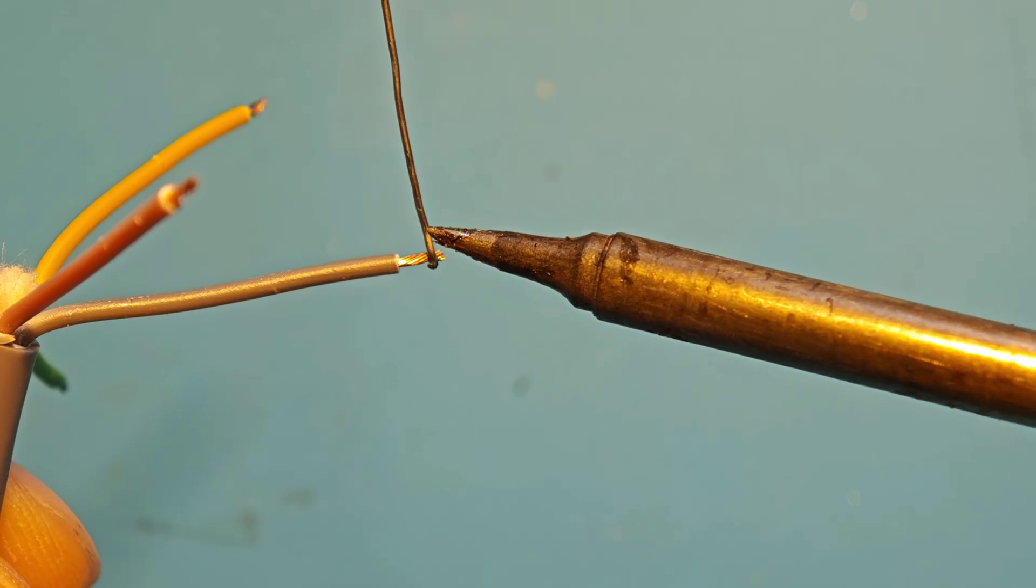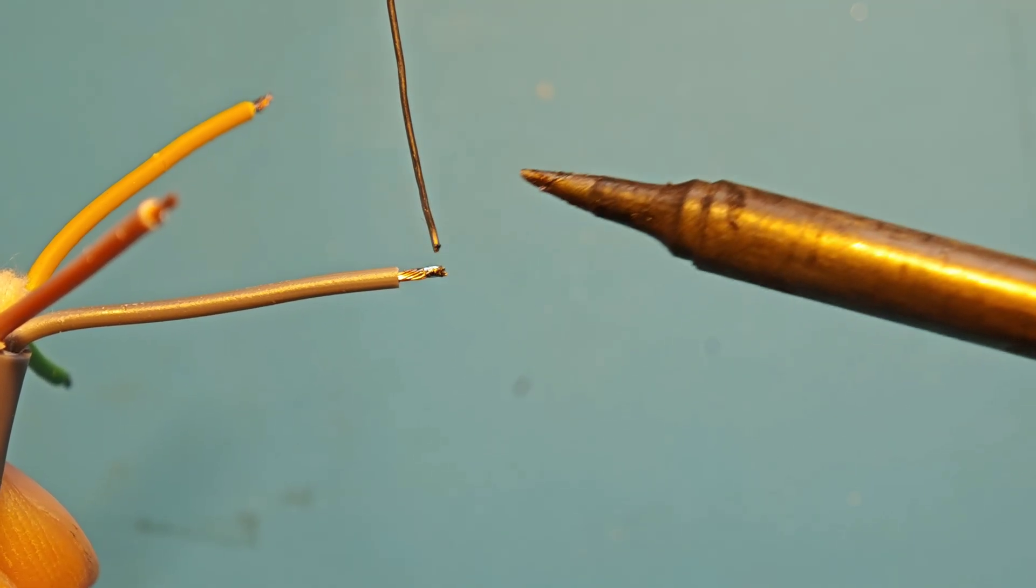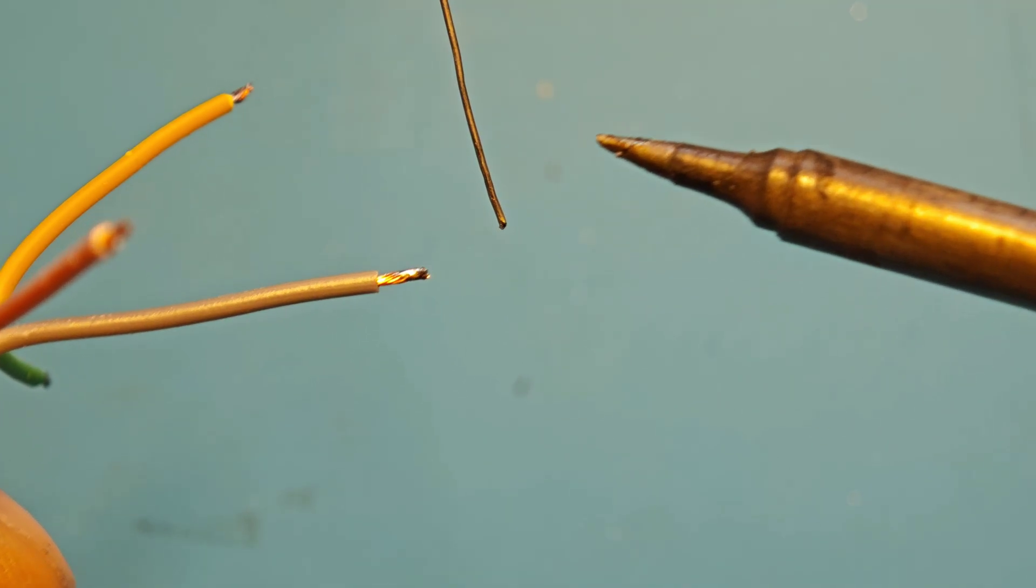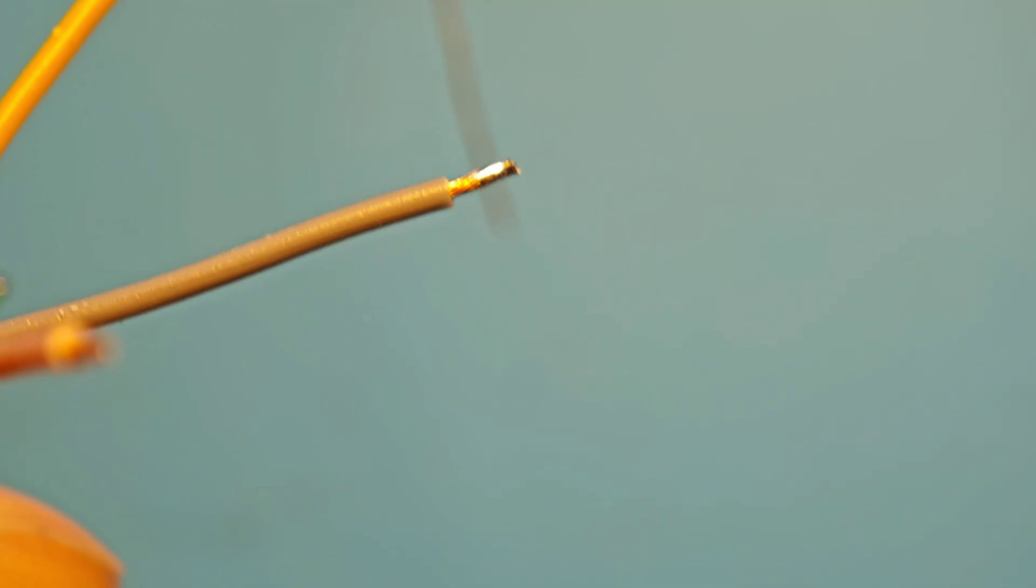Let's see what happens when I try to apply solder to a copper wire without flux. As you can see, the solder didn't spread across the entire copper wire.